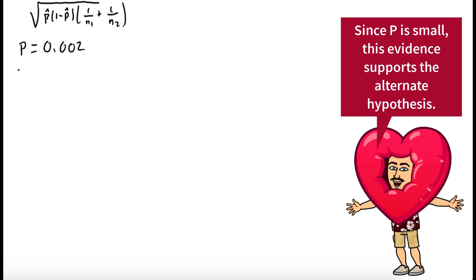This value is smaller than 0.05. Since P is less than 0.05, this is good evidence in support of our alternate hypothesis, which is that injured people wear helmets less frequently than non-injured people.